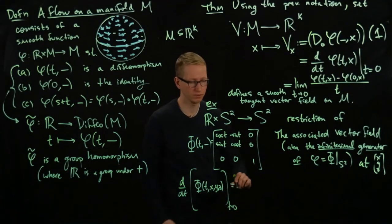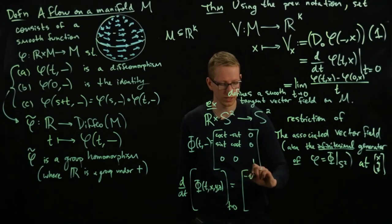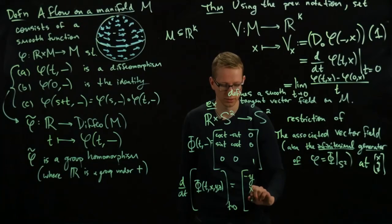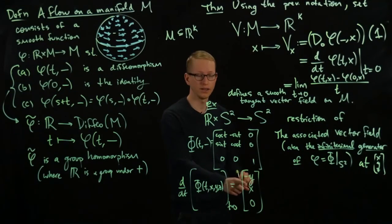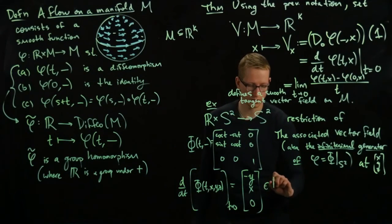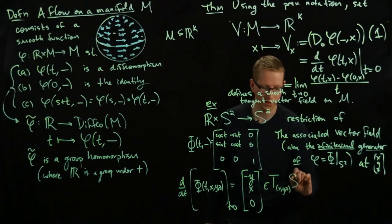Then this just gives me, if you actually calculate this out, gives you (-y, x, 0). So this here, this is an element of the tangent space at the point (x,y,z) of S².